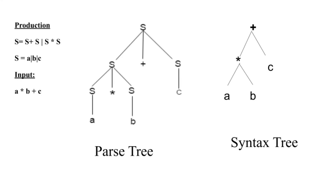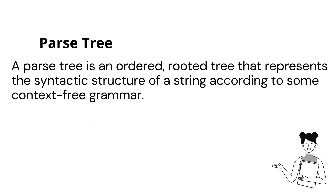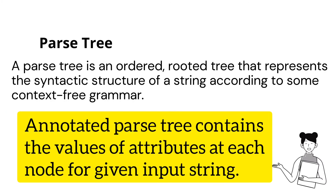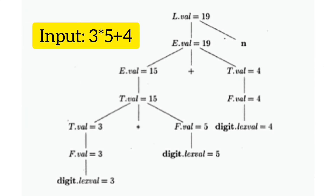This is the Annotated Parse Tree. An Annotated Parse Tree is a parse tree containing the values of attributes at each node for a given input string. This is also called the Decorated Parse Tree. In this example, the input is 3 star 5 plus 4, and the corresponding attributes hold the corresponding values.